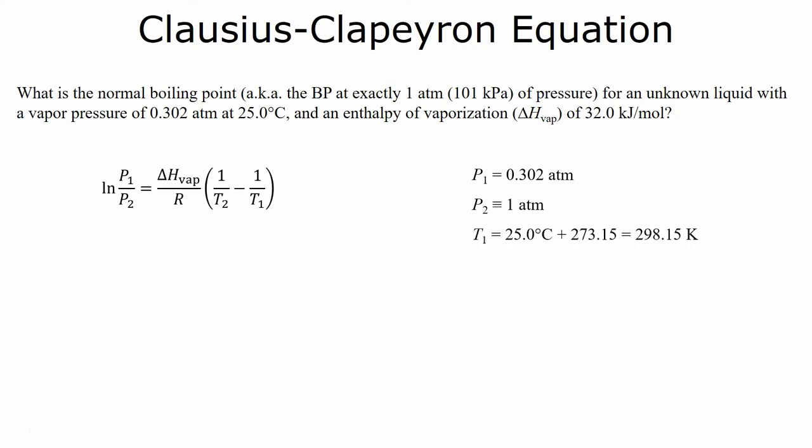We have our initial temperature, and we need to solve for our final temperature. The enthalpy of vaporization, go ahead and convert that to joules per mole. And then finally, our gas constant. Make sure you're using the right gas constant. We're talking about energy here, so we need to use the gas constant that involves the energy unit joules.